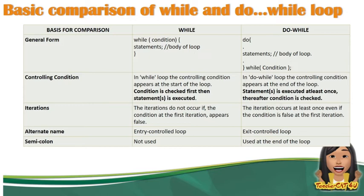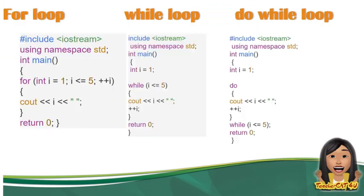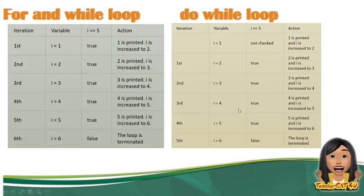Next naman is the iterations. In terms of while, iterations do not occur if the condition at the first iteration appears false. Samantalang sa do-while, gagawin niya muna yung iterations even if the given condition is false. Pag nag-false itong condition sa while, automatic di gagawin yung body — walang iteration na magaganap. Samantalang dito sa do-while, let's say false siya, gagawin niya muna kasi yung statement of code — magkakaroon ng iterations. Yun yung pagkakaiba ng dalawa.